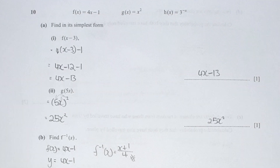Question 10 part a is a function question. I've listed the full workings. The key rule to take note: whatever is inside the bracket — for example, f(x − 3) — the value inside the bracket replaces the x position. This is why you will see me putting 4(x − 3) − 1 as the answer. If you understand this, you shouldn't have any problem solving function questions.